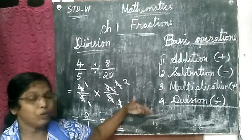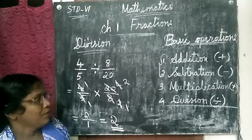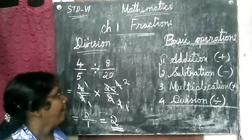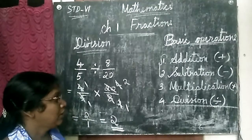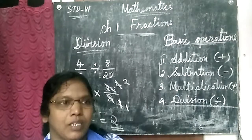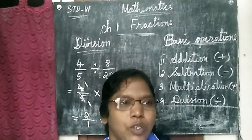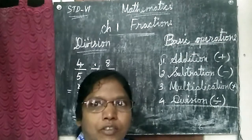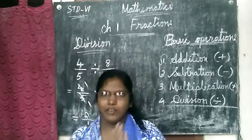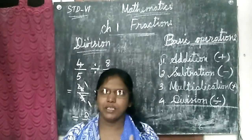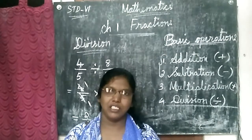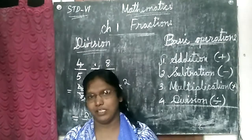We have completed all four basic operations. Using this, exercise 1.1 is there. I taught how to do it. I'll be sending the sums as PDF or as a photocopy — you copy that down. I taught you how to do addition, subtraction, multiplication and division, how to compare fractions, how to find like fractions and unlike fractions, and how to write mixed fractions.